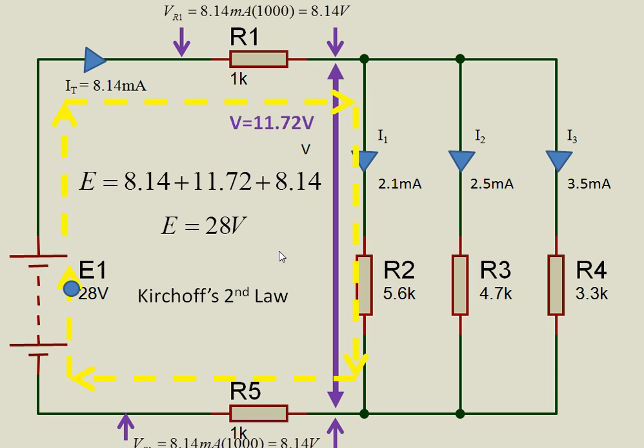And that's what Kirchhoff's second law said. He said the voltage drops in a closed loop is equal to the applied voltage. So the battery voltage here is 28 volts. So we've seen that that is equal to the sum of the voltage drops.